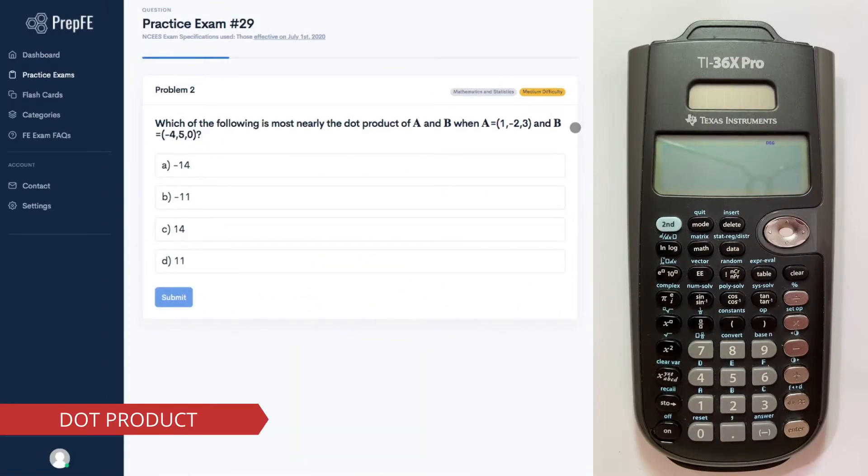Another vector problem you can see on the FE is one that is asking you to calculate the dot product between two vectors. In this problem, we have the same two vectors as the previous problem, except we now need to calculate the dot product instead of the cross product.